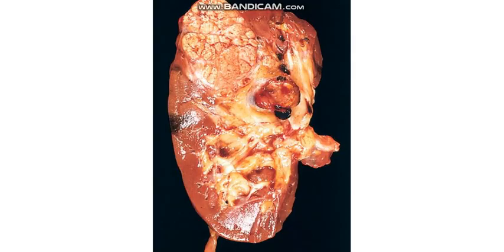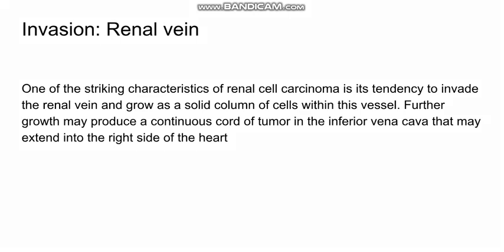Continuing with the gross morphology, renal vein invasion is a very important part of gross morphology in RCC. The renal cell carcinoma is known to invade the ureter and the renal vein. In the renal vein, it grows as a solid column of cells, and sometimes this solid continuous cord of tumour can reach from the renal vein up to the inferior vena cava, and these thrombi and this invasion can reach up to the right side of the heart.